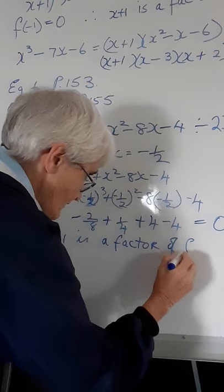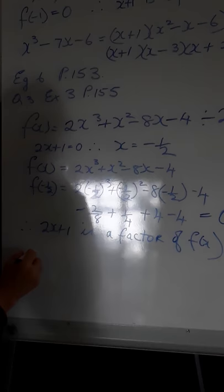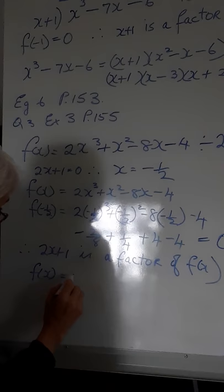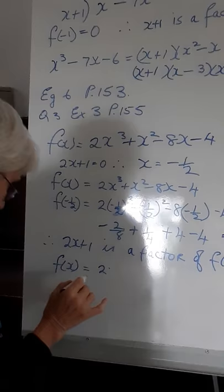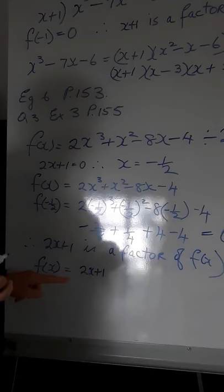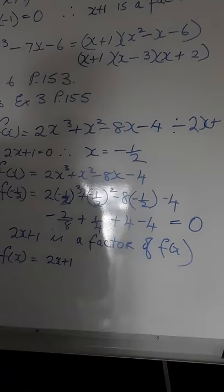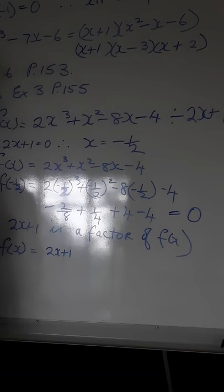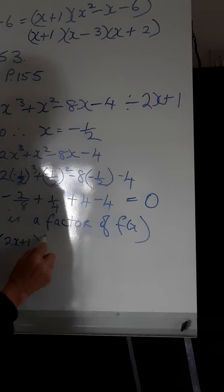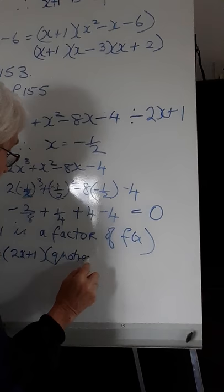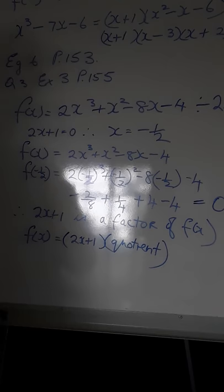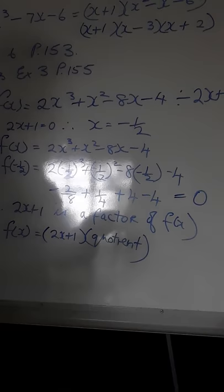2x plus 1 is a factor of f of x. In other words, f of x is equal to 2x plus 1 multiplied by the quotient when 2x cubed plus x squared minus 8x minus 4 is divided by 2x plus 1. We are now going to divide 2x cubed plus x squared minus 8x minus 4 by 2x plus 1, and my quotient is going to be what I get from that division.